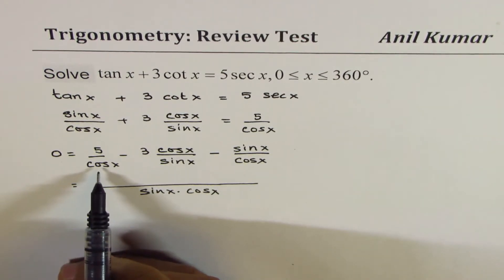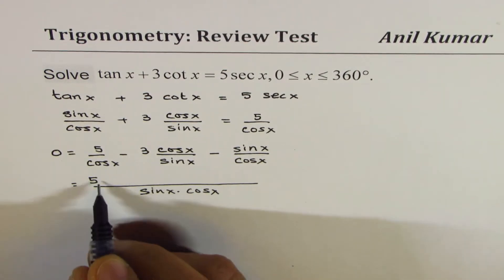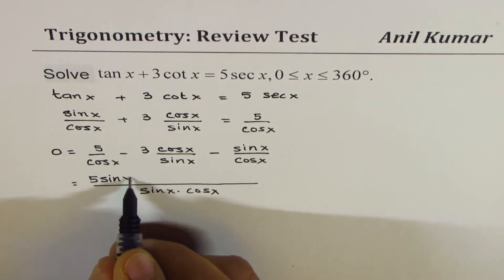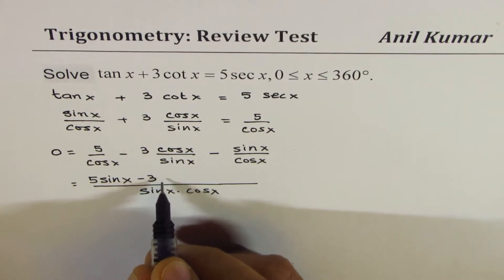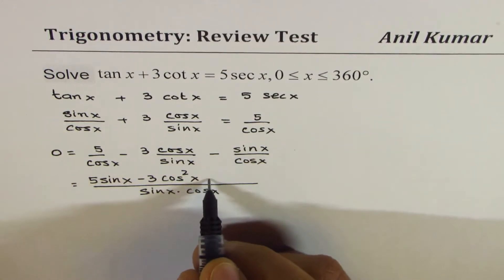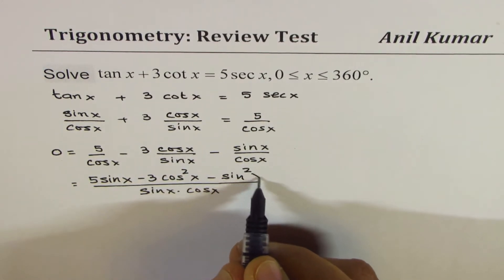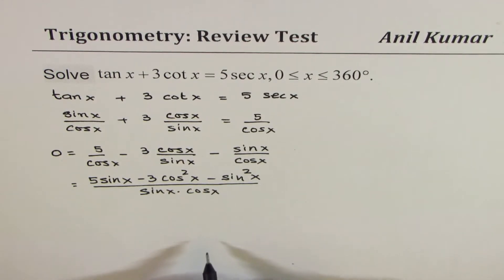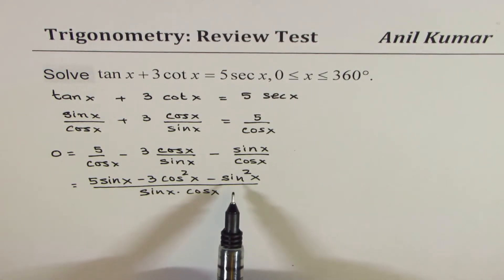To get sine x here in the denominator, we have to multiply by sine x, so we get 5 times sine x. Now in this case, we have to multiply by cosine x, so we get minus 3 cos square x. Here we have to multiply by sine x. Now that gives you a quadratic equation in sine.